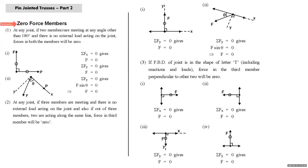Hello students. In the previous lecture on pin jointed trusses, we covered the basic concepts of method of joints and method of sections. We solved five full-length problems on both methods. In this lecture, we will first start with understanding zero force members. Sometimes in examinations they ask you to identify zero force members without any calculations.